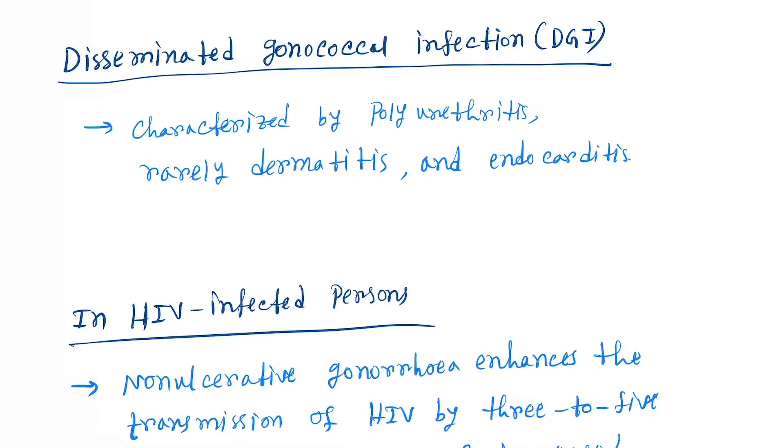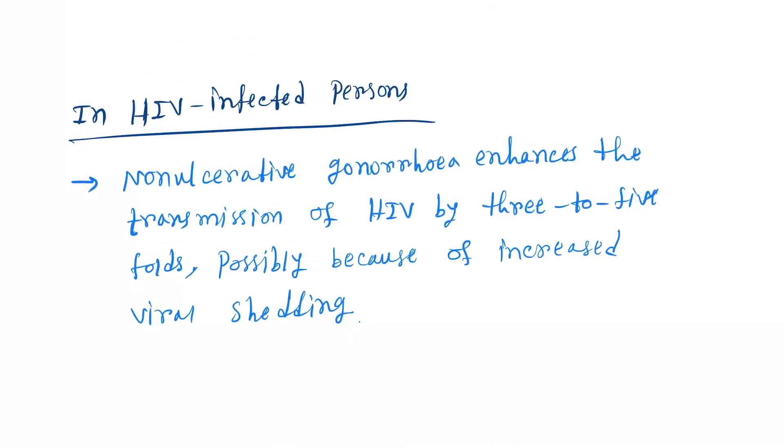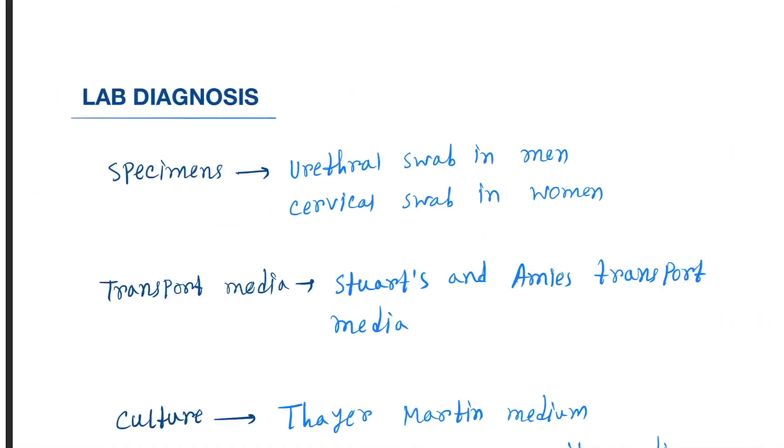Disseminated gonococcal infection is characterized by polyarthritis, rarely dermatitis and endocarditis. In HIV-infected persons, gonorrhea enhances the transmission of HIV by three to five folds.